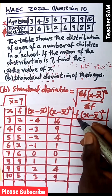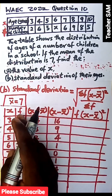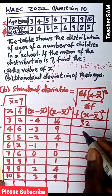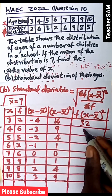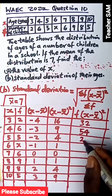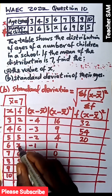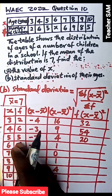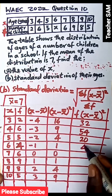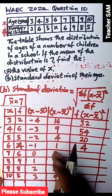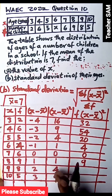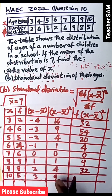Now computing F times (X minus X-bar) squared: 2 times 16 is 32; 6 times 9 is 54; 5 times 4 is 20. Since X equals 4, F for age 6 is 4, so 4 times 1 is 4; 6 times 0 is 0; 9 times 1 is 9; 8 times 4 is 32; and 5 times 9 is 45. We are done filling the table.